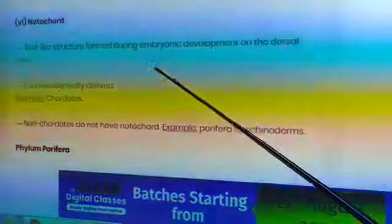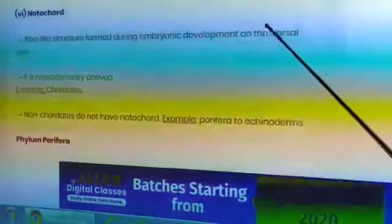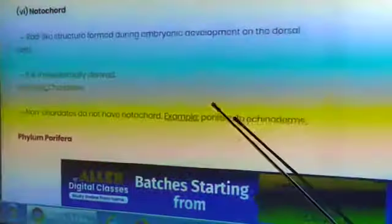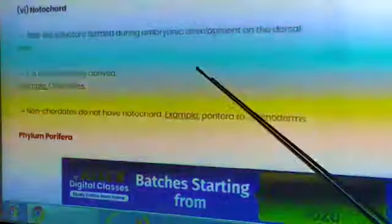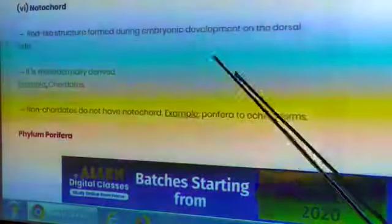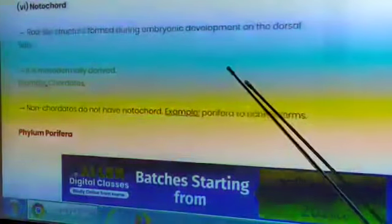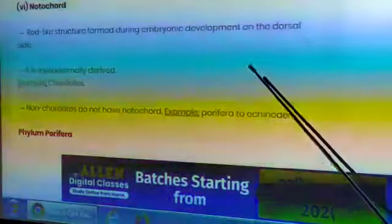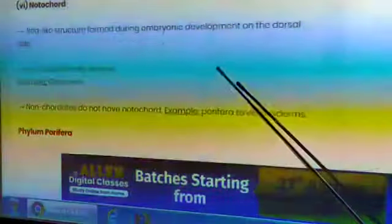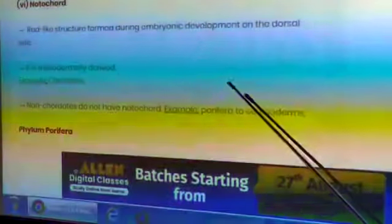Next is notochord. Notochord: rod-like structures formed during embryonic development on the dorsal side. It is mesodermally derived. Example: chordates.